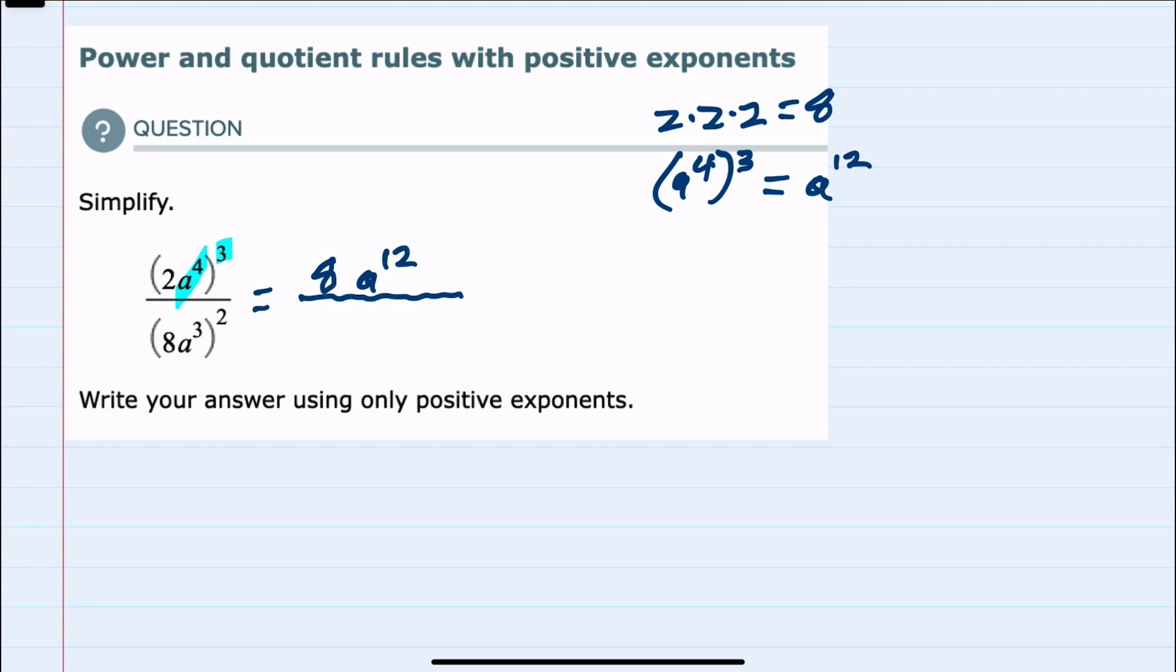We've gotten rid of the 3 on the outside. In the denominator we have a 2 exponent outside of the parentheses. Starting with the 8, 8 squared is 8 times 8 or 64. Then the a to the 3 being squared, again we have a power on the inside and a power on the outside. We would keep the variable a and multiply those two powers, a to the sixth in the denominator.